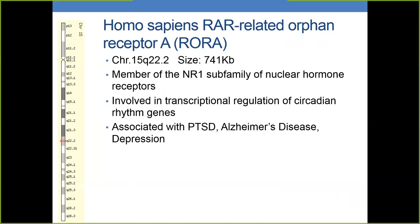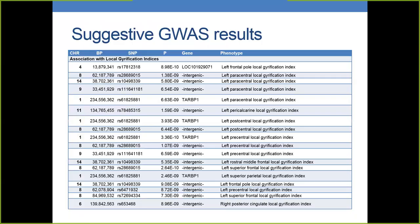The second gene related to the cavum septum pellucidum is RORA, a RAR-related orphan receptor A. It is a member of the NR1 subfamily of nuclear hormone receptors, involved in circadian rhythm genes, and associated with PTSD, Alzheimer's disease, and now also depression. It is less than 1 megabase on chromosome 15. There are also many suggestive GWAS results from the gyrification indices. These are global metrics, so gyrification in one region is highly related to another, and it is not surprising to find the same gene — for example, TARBP1 — associated with different regional gyrification indices.